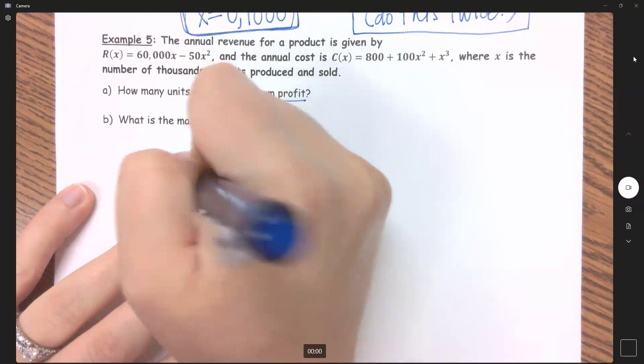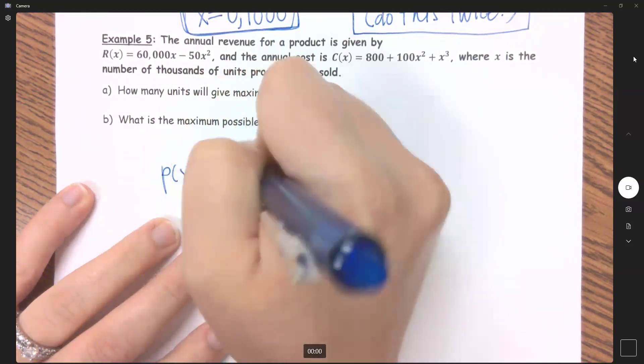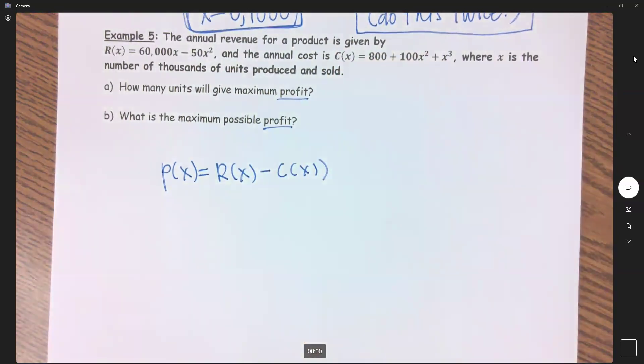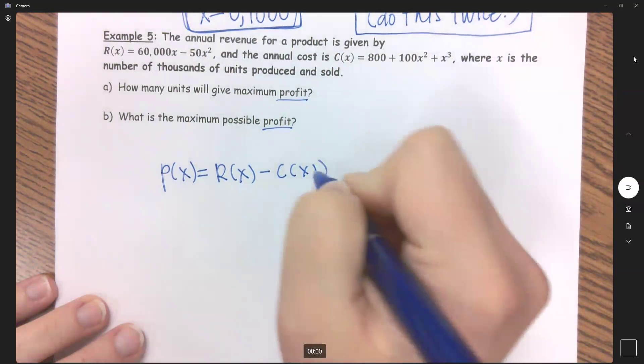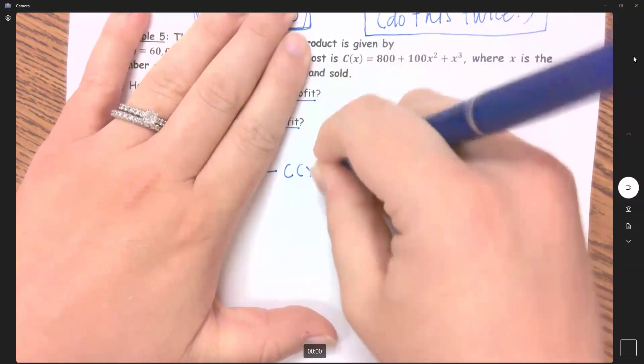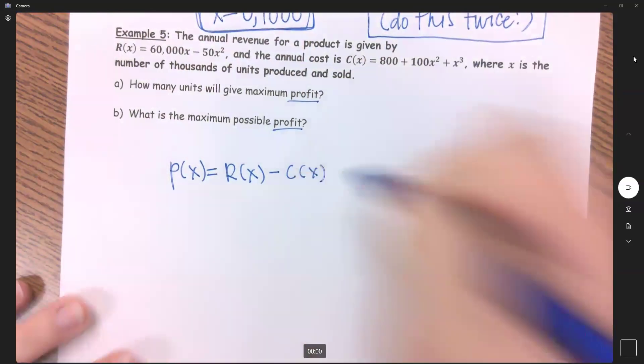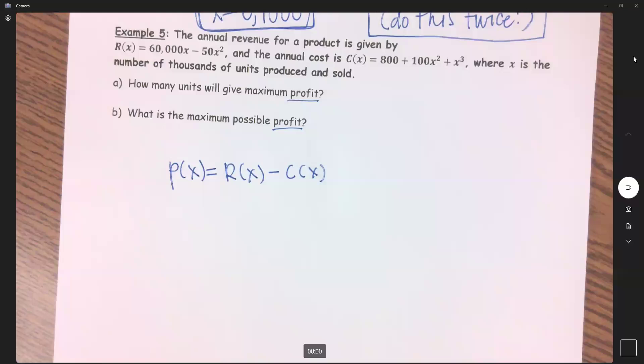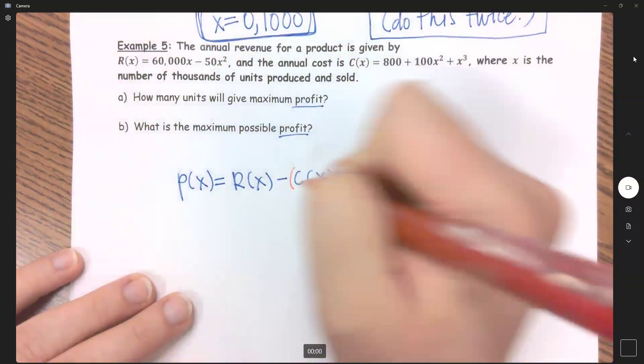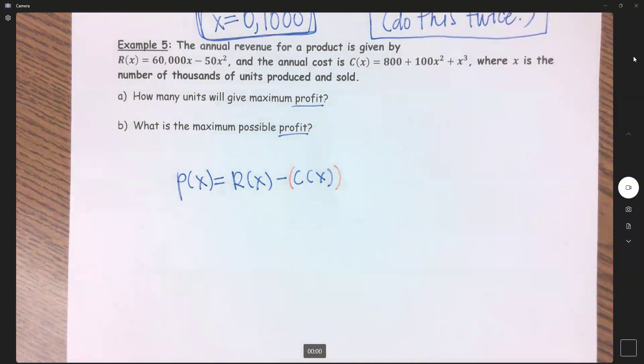Profit equals my revenue minus my cost. Remembering from a lesson that we did, I think in module two or maybe the beginning of module three, we need to remember to put that entire cost function in parentheses.